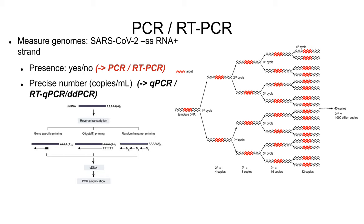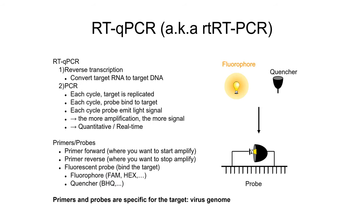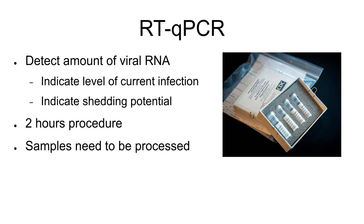For RT-PCR, a reverse transcription step is needed because it is an RNA virus. Once the virus is reverse transcribed and you have a cDNA template, amplification occurs. Generally, we do up to about 40 cycles, though you can go higher. The reverse transcription converts RNA to the target DNA. In each cycle, the target is replicated, the probe binds to the target, and the probe emits light signals. RT-qPCR detects the amount of viral RNA, can indicate the level of current infection and shedding potential, and can be a rapid two-hour procedure.